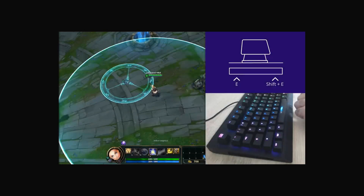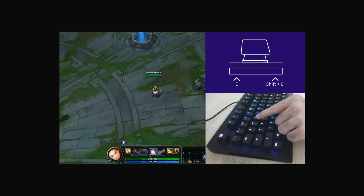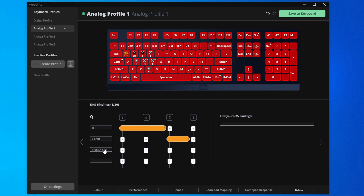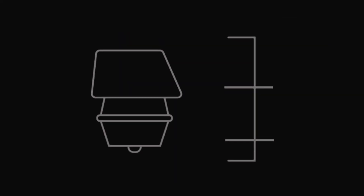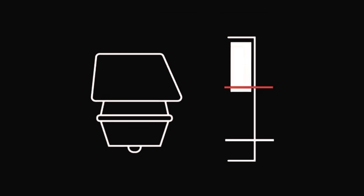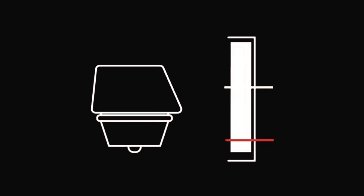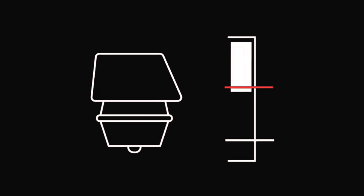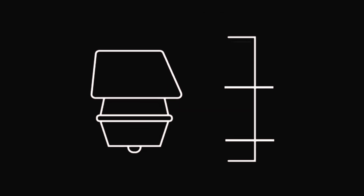Now in addition to adjustable actuation point, our keyboards also come with a DKS feature. DKS stands for dynamic keystroke and allows you to set certain key binds for keys depending on where it is during the keystroke, meaning you can bind an action when the key is first pressed, when it's at its lowest actuation point, when the key is coming back up, and when the key finally returns to its highest actuation point.